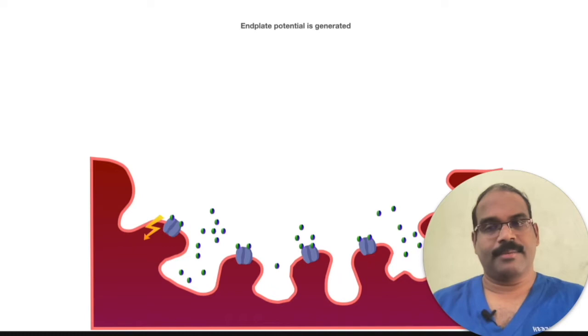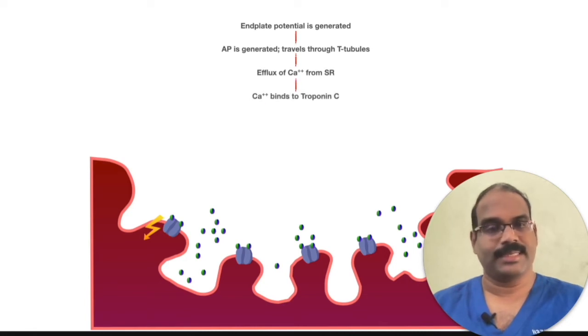This is an end plate potential that evokes an action potential that is conducted throughout the entire sarcolemma via the T-tubular network which invaginates the muscle fiber. This is the excitation phase of the excitation-contraction process, eventually leading to muscle fiber twitch.